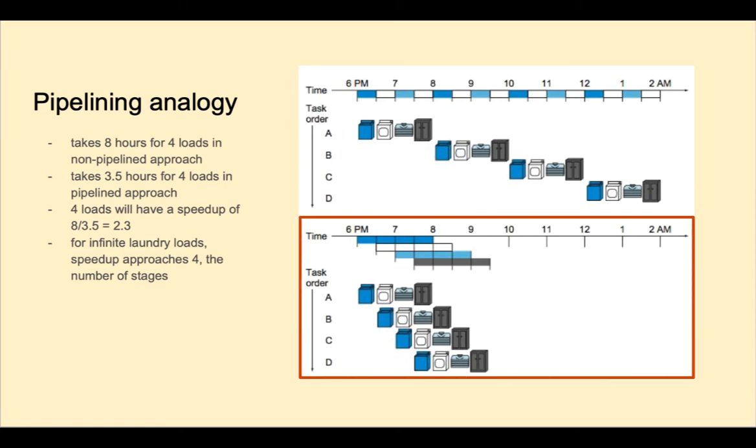In the bottom diagram we have the pipelined approach to laundry. A person starts the first load of wash. As soon as the washer is free, they throw those clothes in the dryer and start another load. Instead of taking 8 hours for 4 loads of laundry, the pipeline version just takes 2.3 hours. In general, the speedup approaches the number of pipeline stages.